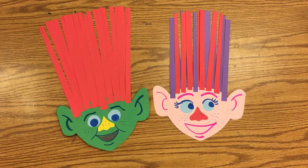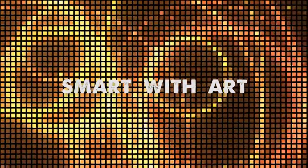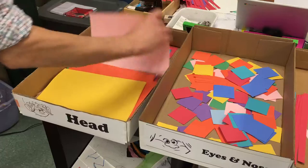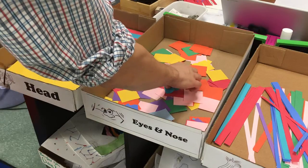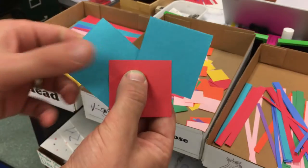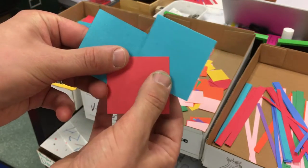Today we're going to make these little troll doll heads based on the movie Trolls. Start by getting a piece of paper for your head, and then you're going to need to get two pieces for the eyes and a piece of paper for the nose. You'll probably want to have the eyes the same color.